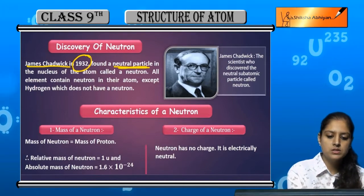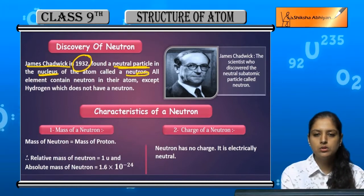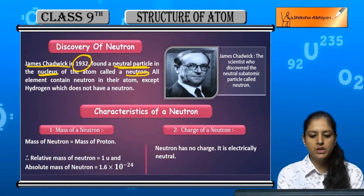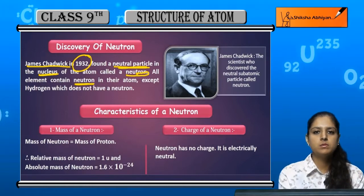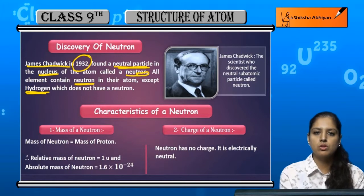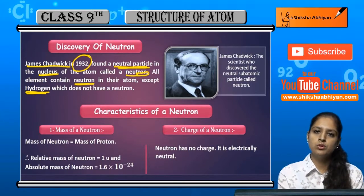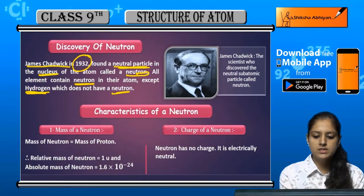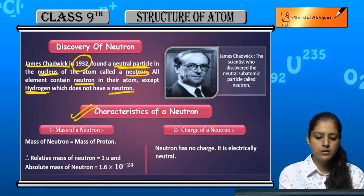The neutron is found in the nucleus of the atom and is called a neutron. All elements contain neutrons, except hydrogen. Hydrogen has no neutron — it has only one proton and one electron. Now coming to the characteristics of a neutron.